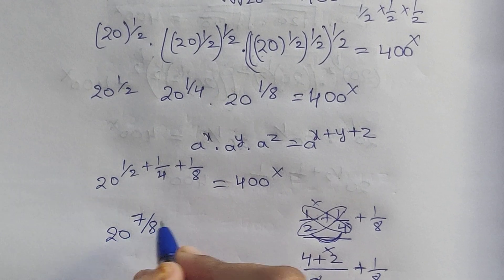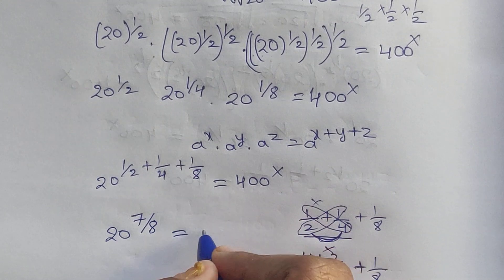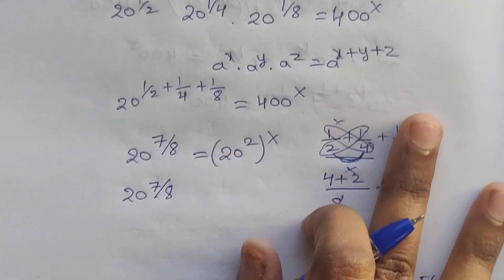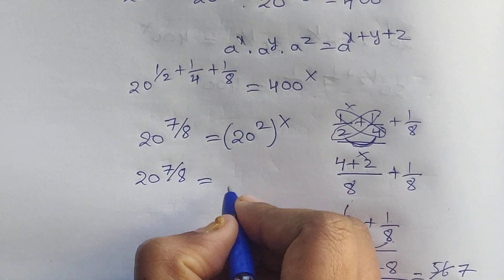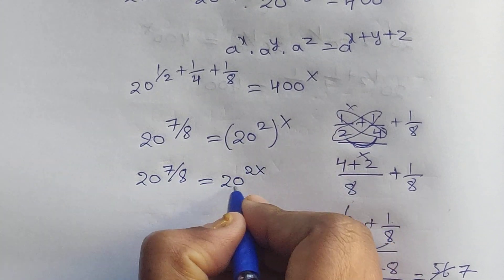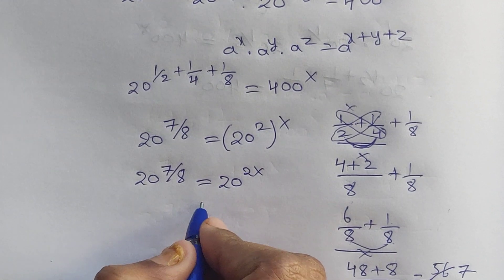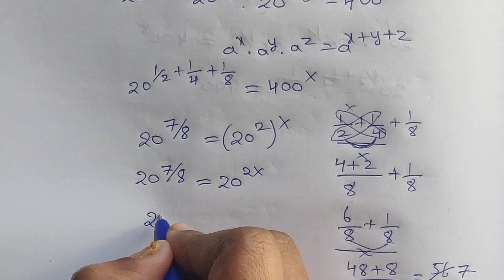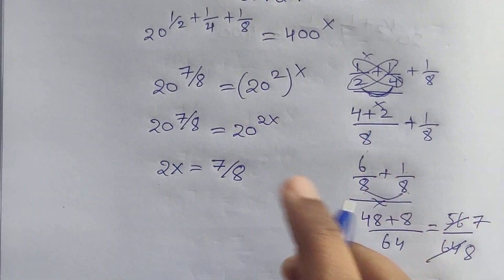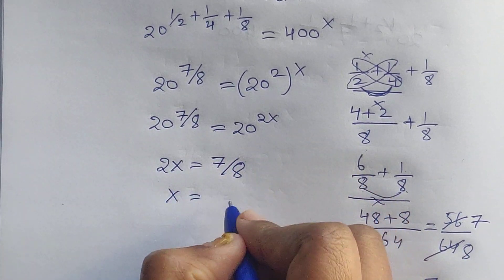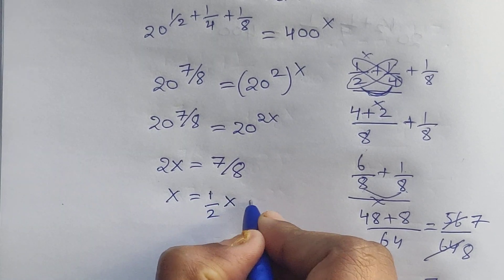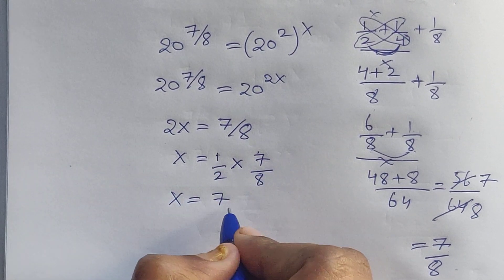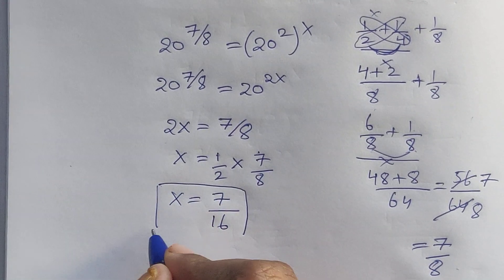Now, 400 can be written as 20 squared. So 20 to the power of 7/8 equals 20 squared to the power of x, which is 20 to the power of 2x. Since the bases are the same, we equate the exponents: 7/8 equals 2x. So x equals 7 divided by 16, that is 7 by 16. Therefore x equals 7/16.